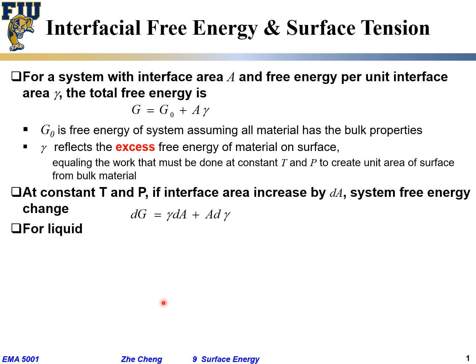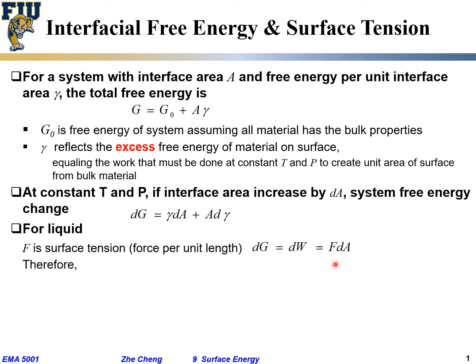The simplest case for people to understand is liquid. For liquid, people use the so-called surface tension term, which you can measure — for example, by how high liquid rises in a tube by capillary force counterbalanced by gravity. You can easily measure the so-called surface tension. If we call F the surface tension, it quite often has units of newtons per meter.